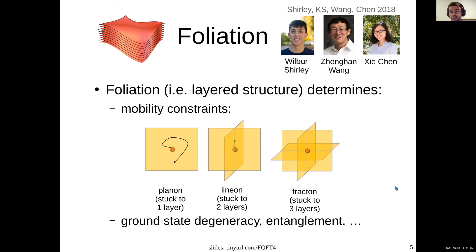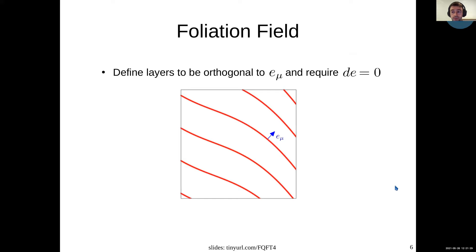Now that we've identified the space-time structure, in order to write down a field theory, now we have to figure out how to describe the structure in terms of some sort of continuous field. Instead of using a metric that we usually use to describe space-time structure, since now instead of a Riemann geometry, now we have a foliation, so we're going to use a different kind of field. We're going to use this one-form field, which I'll call a foliation field, which is also used in the mathematical literature to describe foliations. We'll define the layers to be orthogonal to this one-form. And a consistency condition for this to make sense is we'll have to require that e is closed, so it has zero curl.